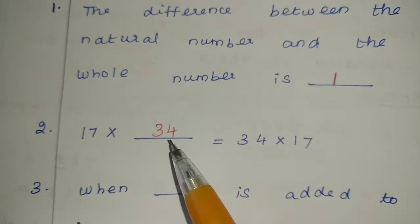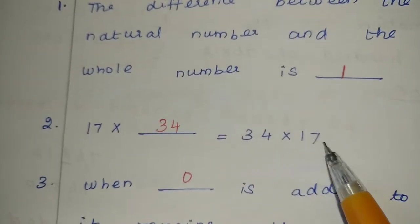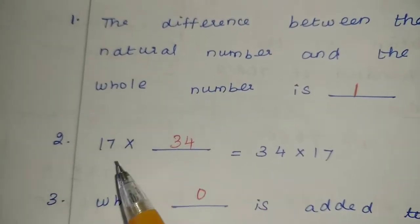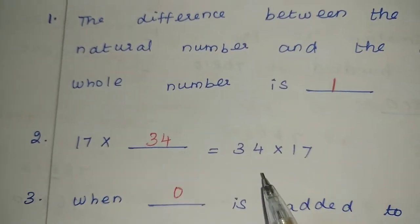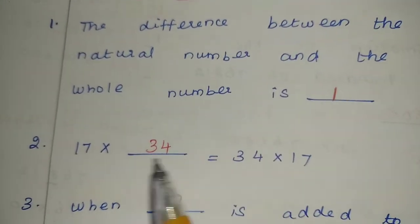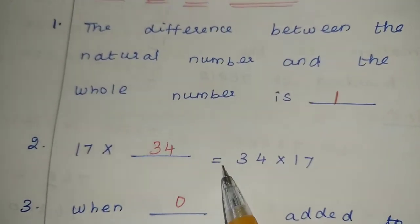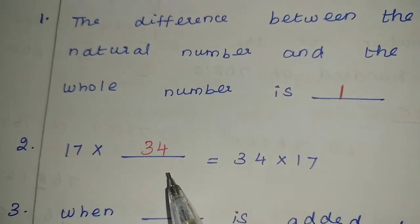Next, 17 into blank equals 34 into 17. Here you need to see the number properties. Which property has these two numbers repeating? Yes, commutative property.